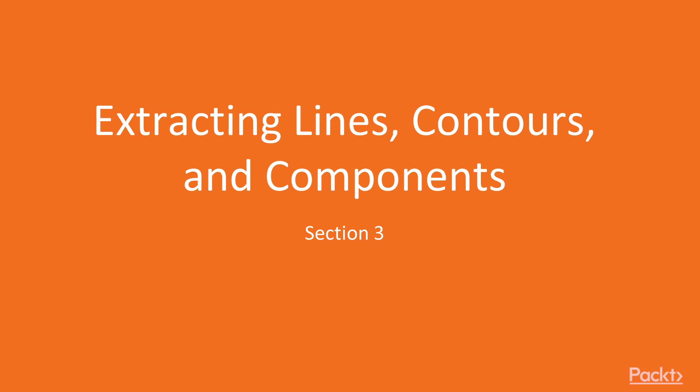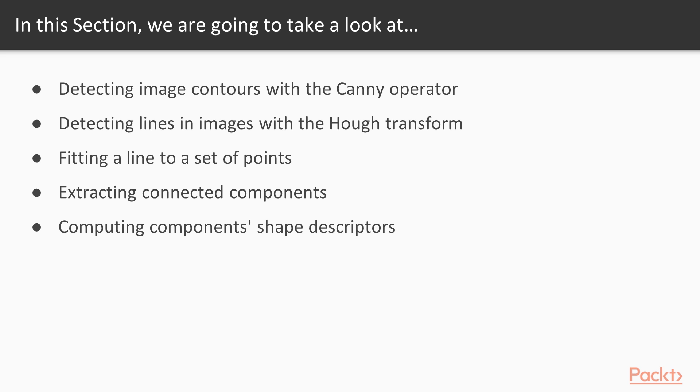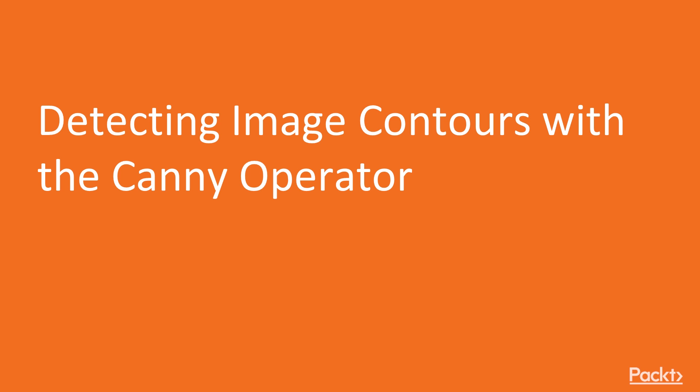Welcome to the new section of the course: extracting lines, contours, and components. In the previous section we learned how to detect edges of an image — specifically, that by applying a threshold to the gradient magnitude, a binary map of the main edges can be obtained. In this section we will detect image contours with the Canny operator, detect lines with the Hough transform, fit a line to a set of points, extract connected components, and compute component shape descriptors.